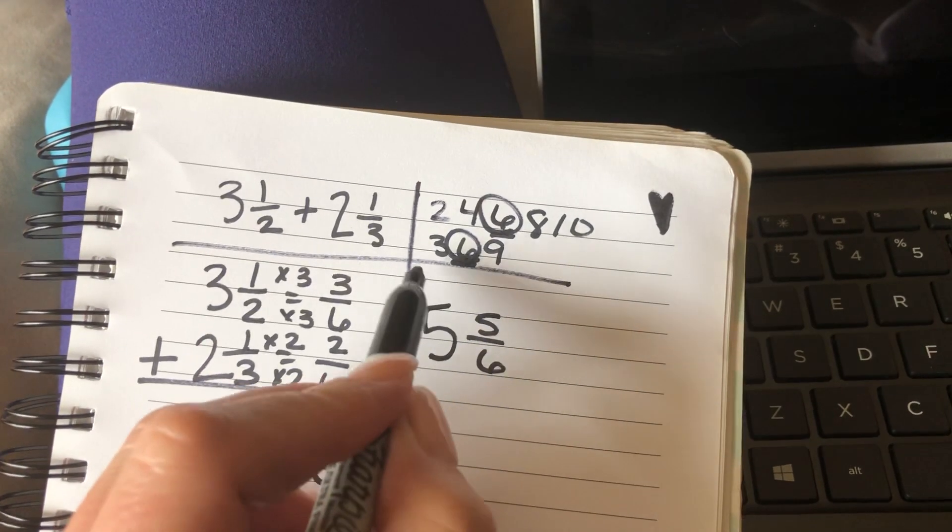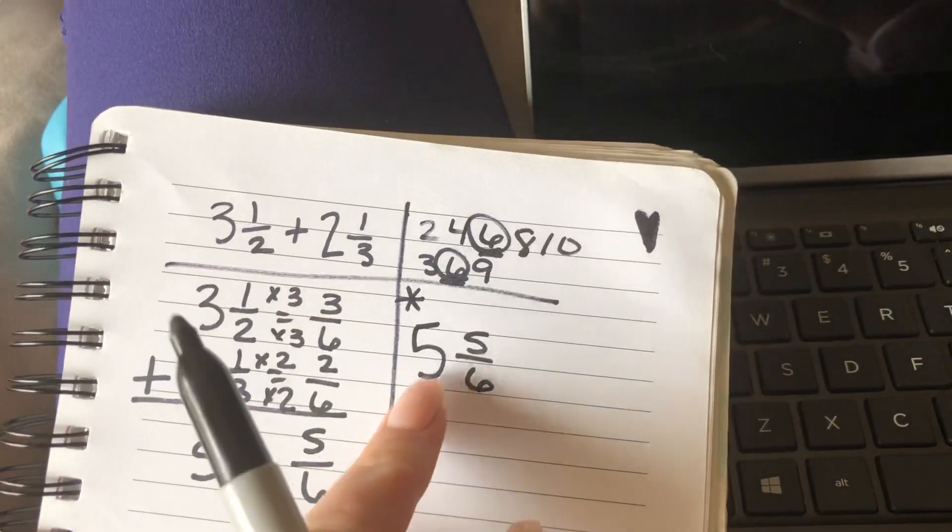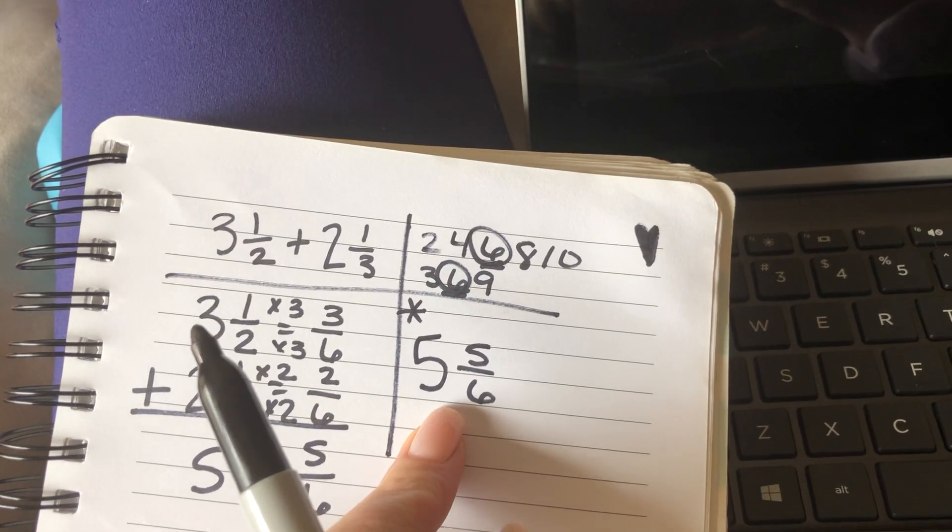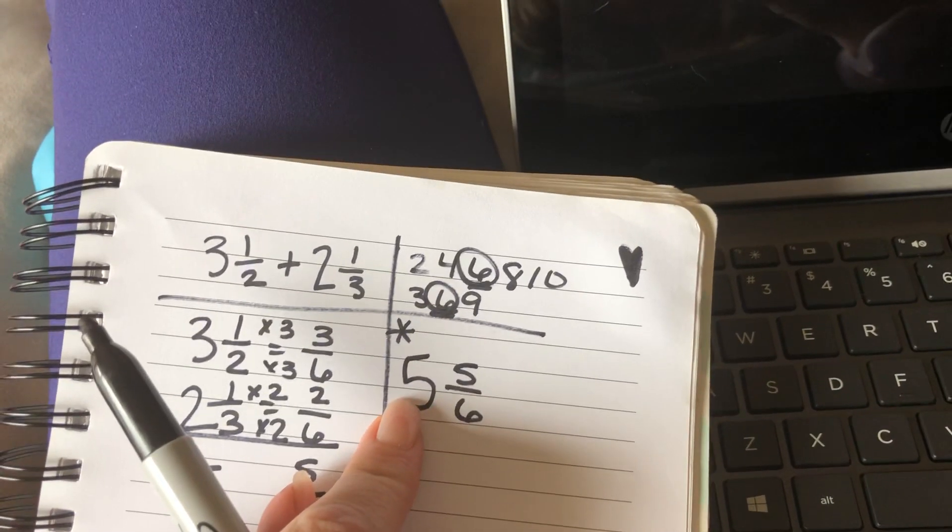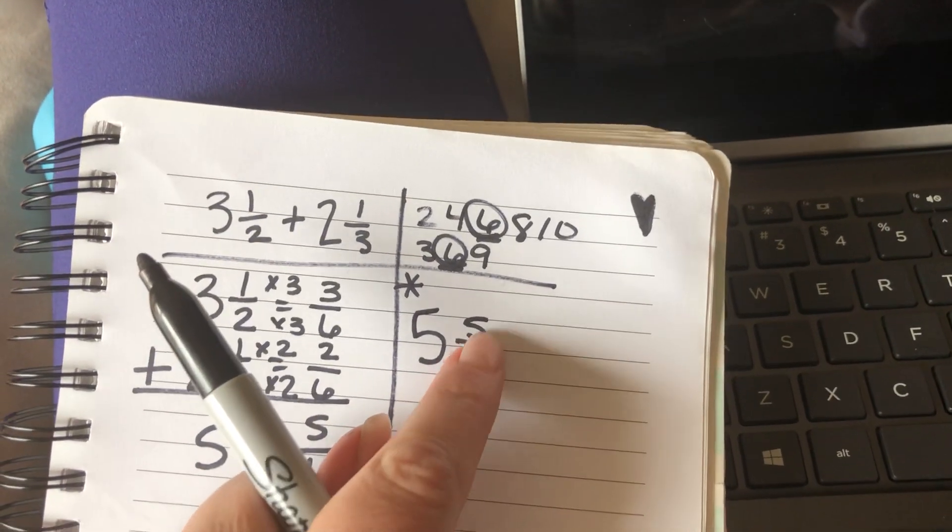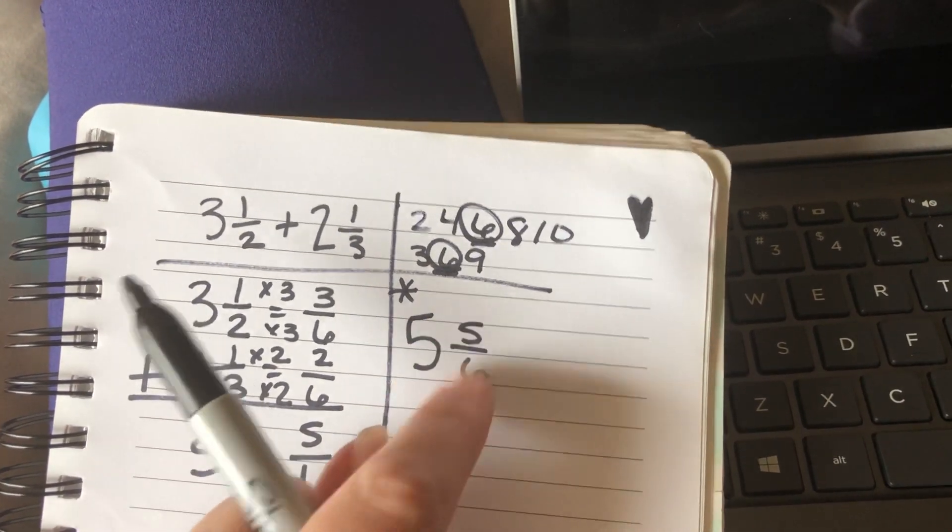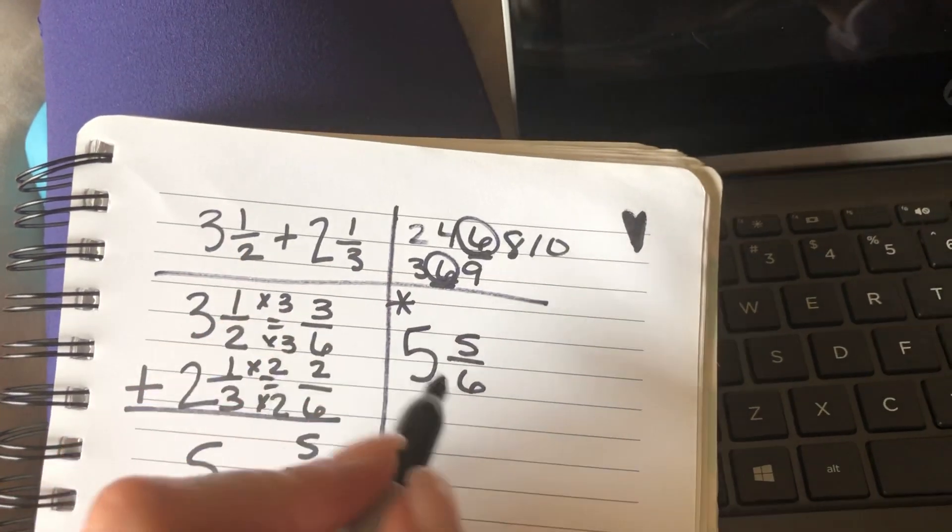Now, you always, your last step, okay, super important, always check to see if you can simplify this fraction. Your whole numbers should stay your whole number. You can't make it simpler. But always check to see if this can be simplified. Now, 5/6 is 1 away from a whole, so we know that's in simplest form. So we're good.